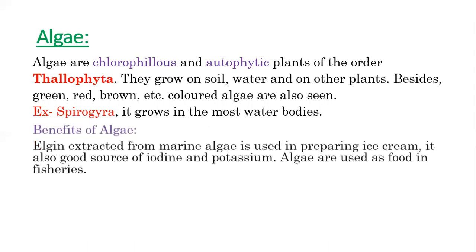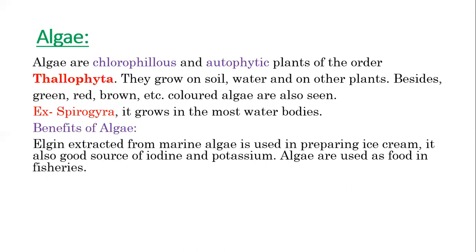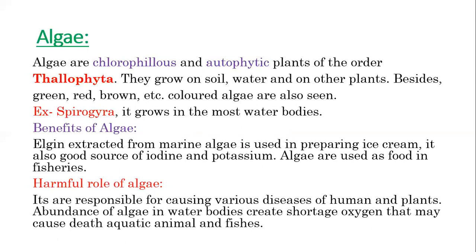Benefits of algae: algin extracted from marine algae is used in preparing ice cream. It is also a good source of iodine and potassium. Algae are used as food in fisheries. Harmful role of algae: they are responsible for causing various diseases of humans and plants. Abundance of algae in water bodies creates a shortage of oxygen, which may cause the death of aquatic animals and fishes.